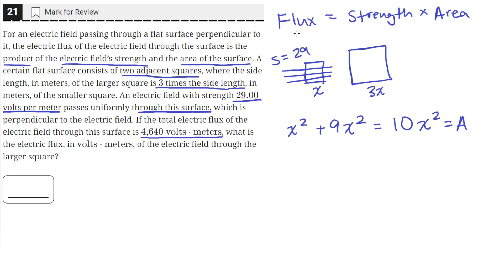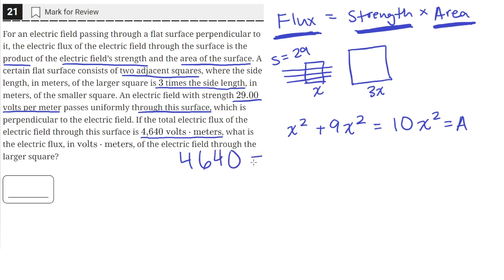Now we know the area, we know the strength, and we know the total flux, so we can write up an equation. We're given that the total electric flux is 4,640 volt meters, the strength is 29 volts per meter, and the area is the total area expression we derived, which is 10x squared. This is an equation with only one variable, so we can solve.